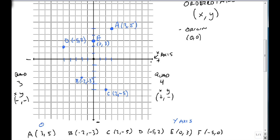So remember this was quadrant 1, quadrant 3, quadrant 4, then quadrant 2. And our E is on the y-axis. And F here at (-5, 0) is on the x-axis.